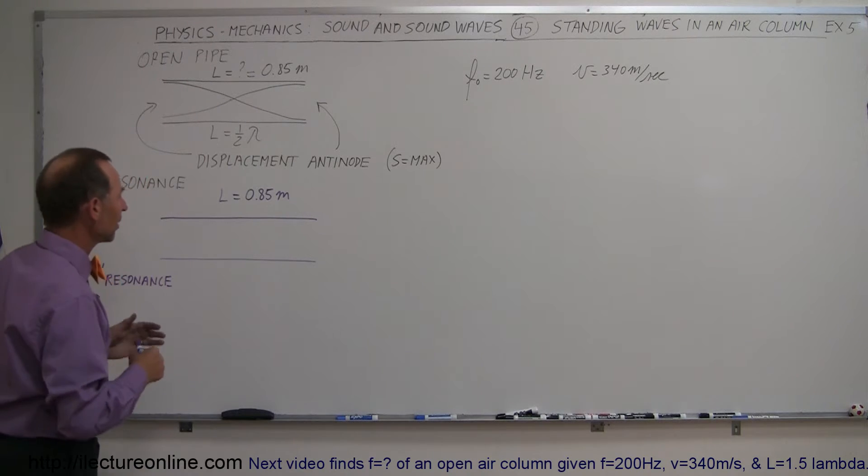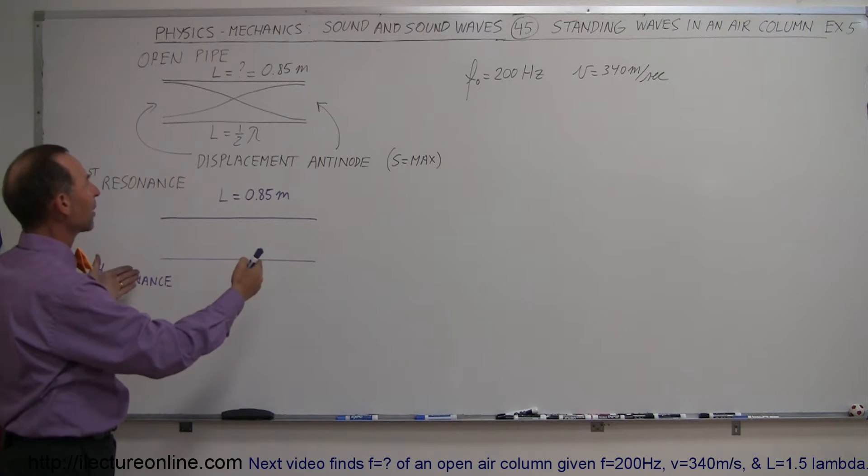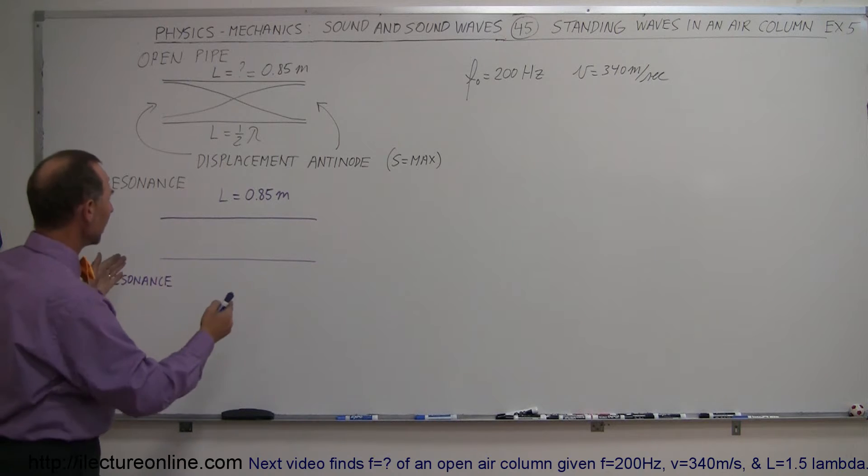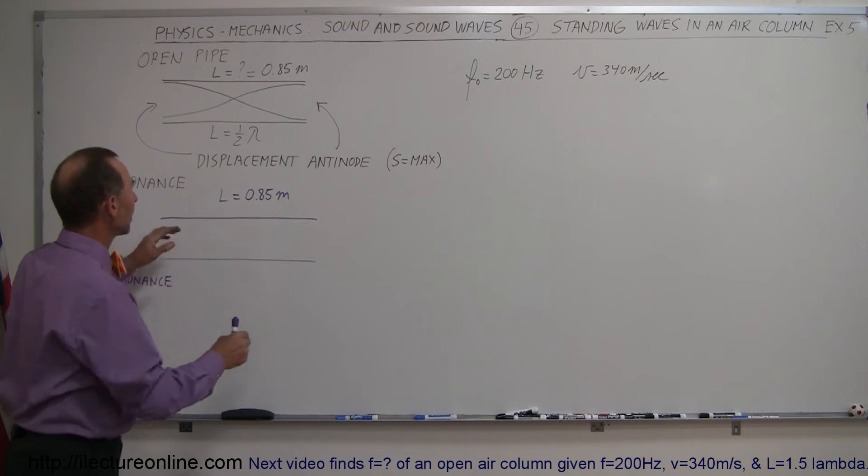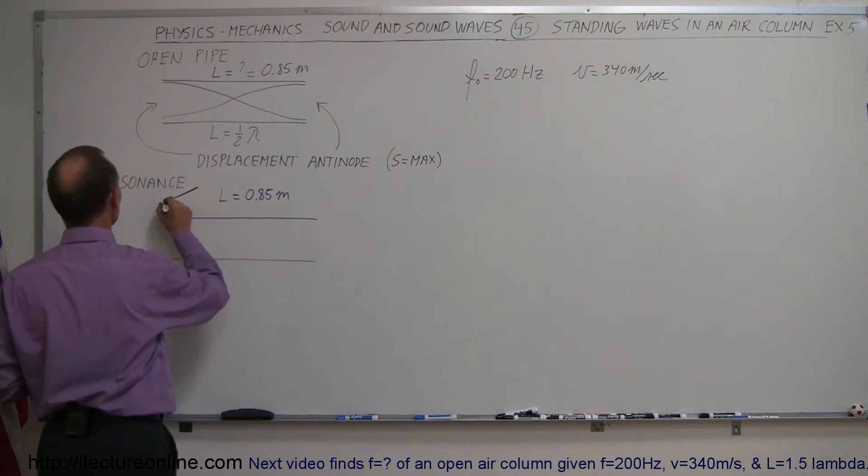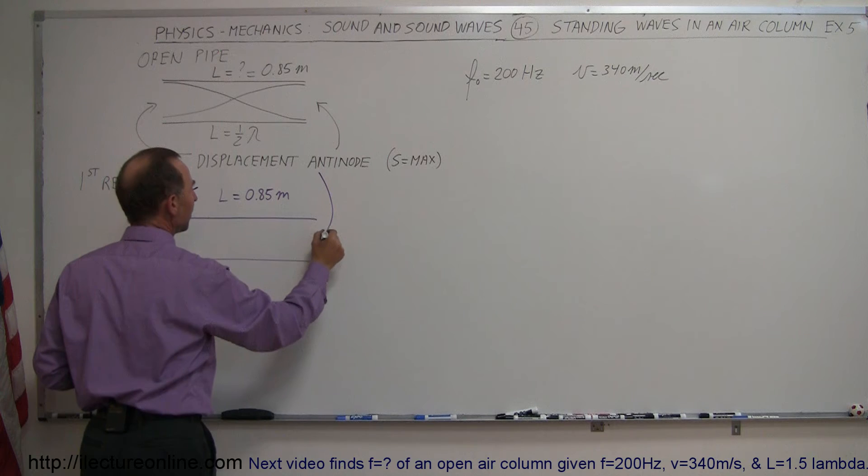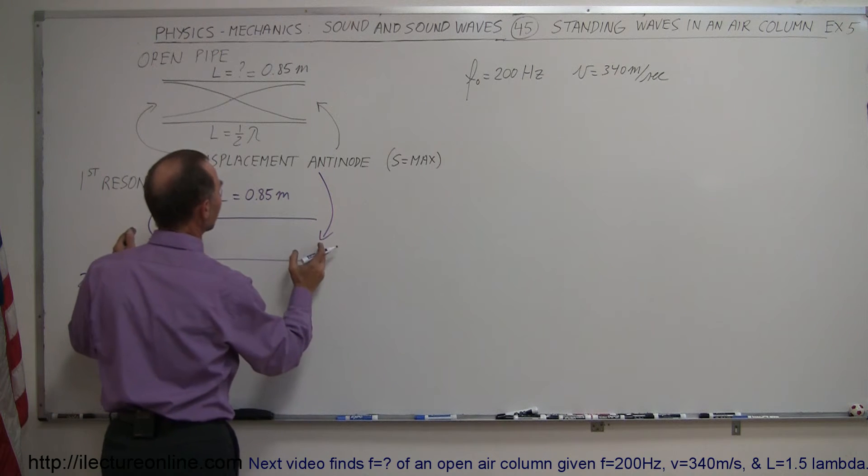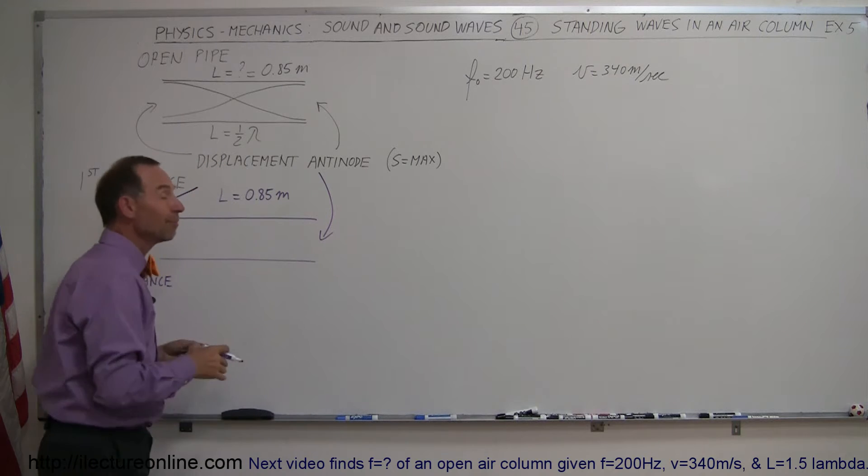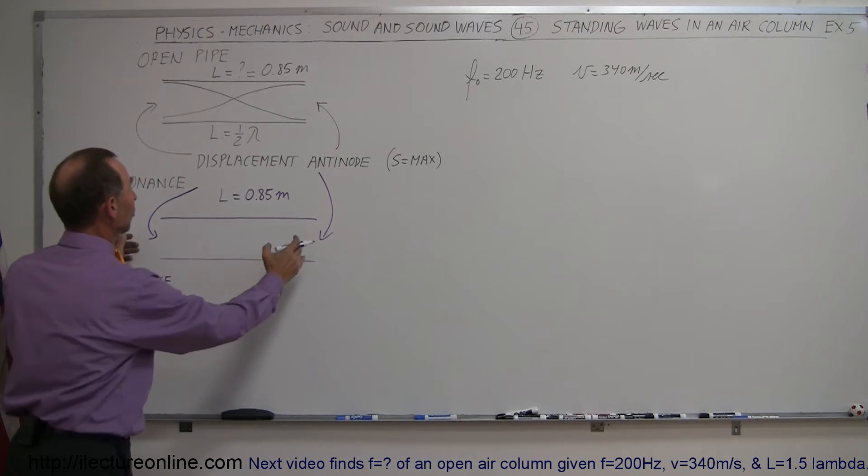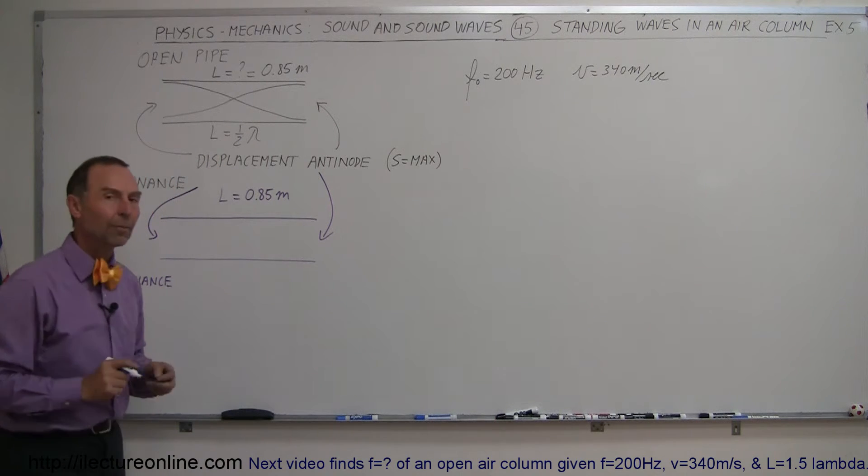So in our next example, trying to set up a resonance frequency of a sound wave in an open-ended pipe. Open-ended means it's open on both sides in such a way that you have a displacement anti-node on both sides of the pipe, which means anti-node means maximum displacement and therefore zero pressure difference at the ends of the pipe.